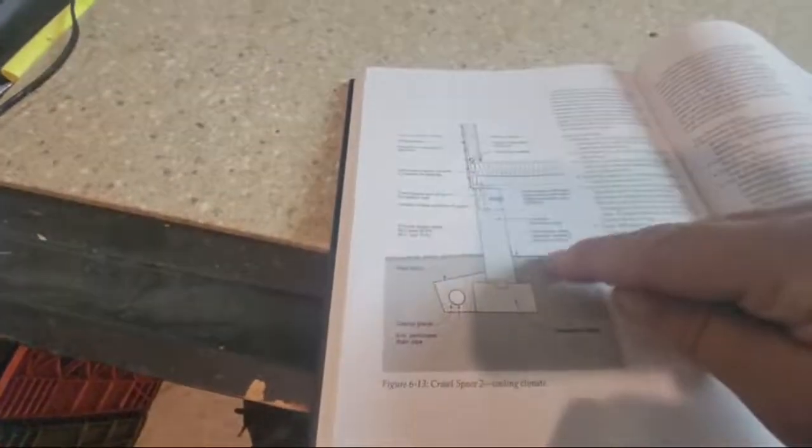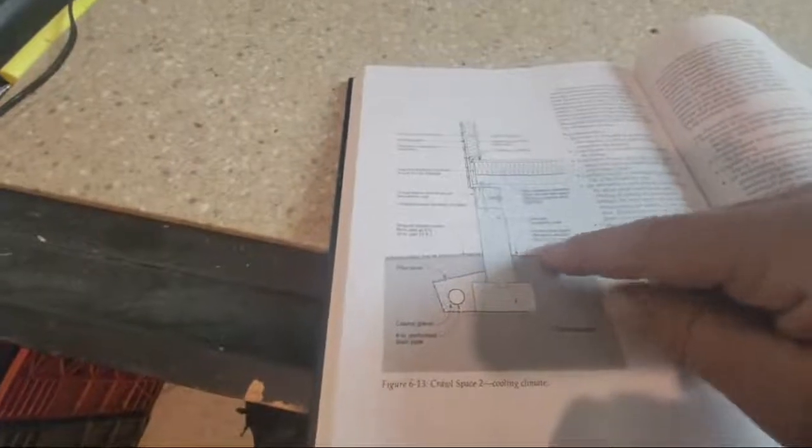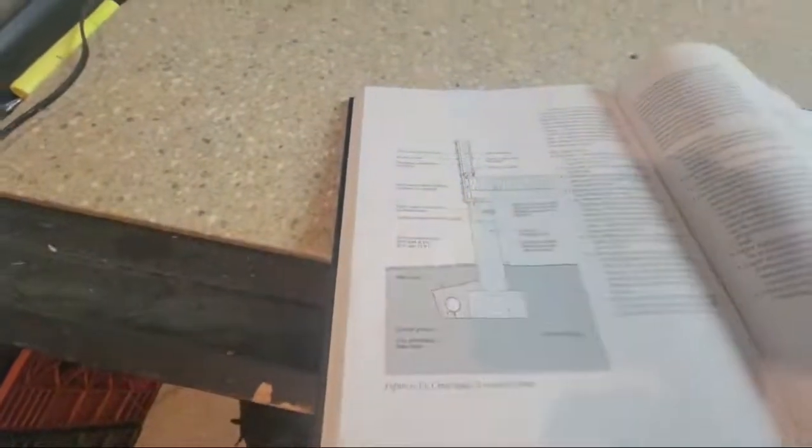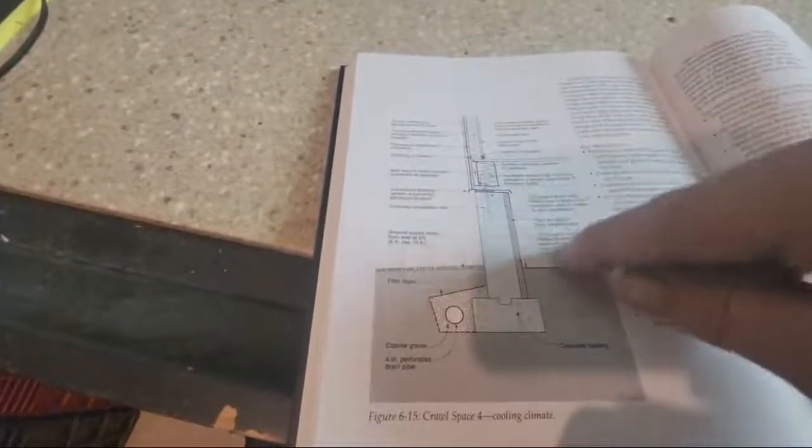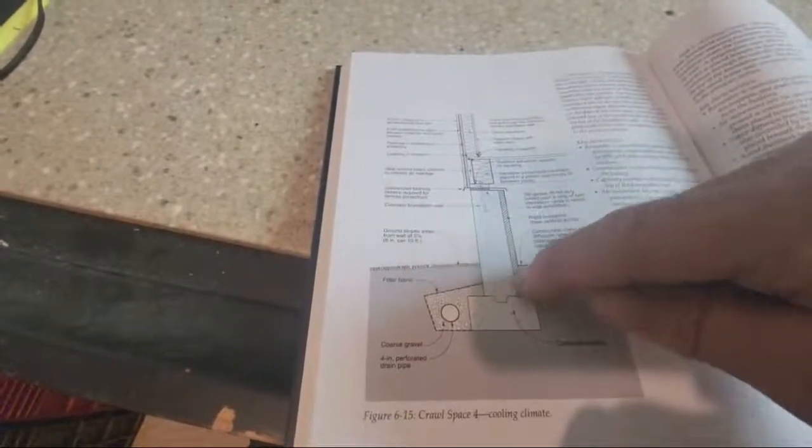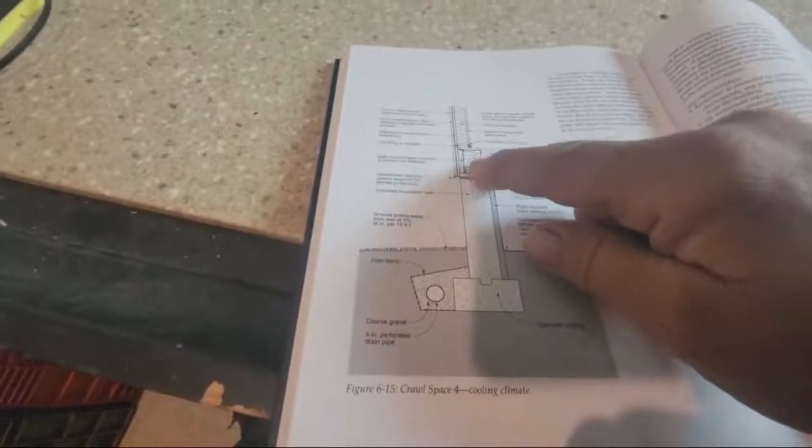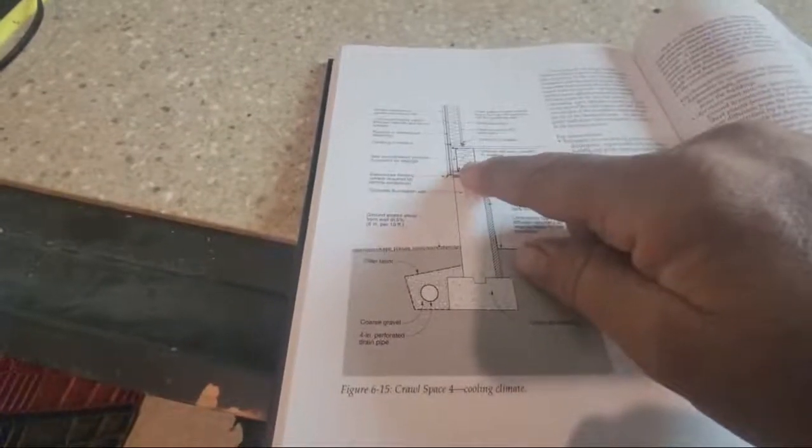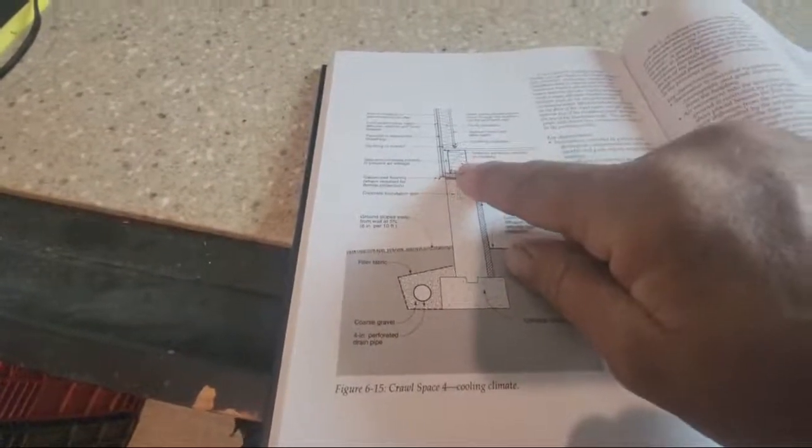Remember, we showed you the insulation is on the floor in a vented crawl space. We still have the vapor barrier, that stays the same. The vent changes, so we don't have a vent, and we have the insulation on the outside wall. They call it an insulation pillow, placing a bag snugly between a joist.